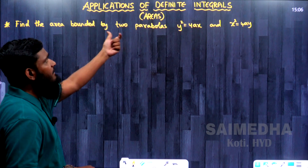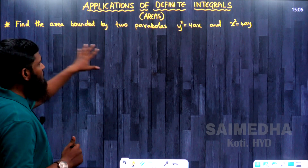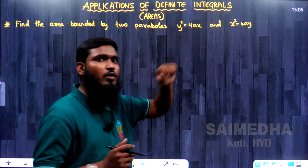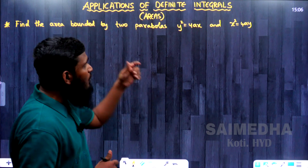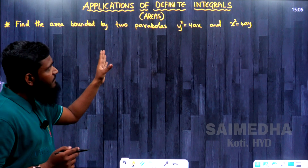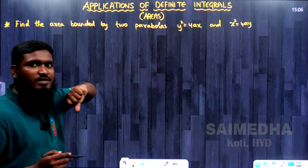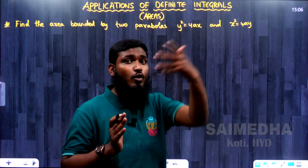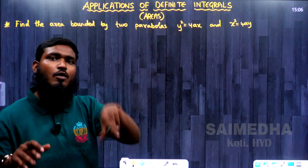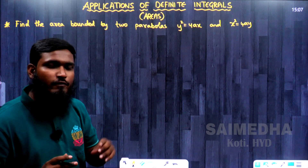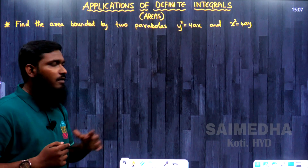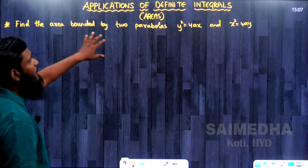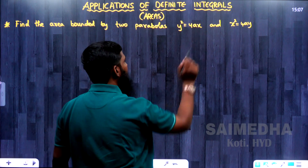Let us concentrate on one topic over here — areas. First we will see the question completely: what is the concept, how to solve it using complete graphs. Then we will look at how to solve this question in the ECET examination efficiently, because if you waste time in the examination, you can't attempt all the questions. We must follow some time-saving results. The question is: find the area bounded by two parabolas y² = 4x and x² = 4ay.